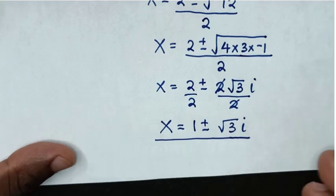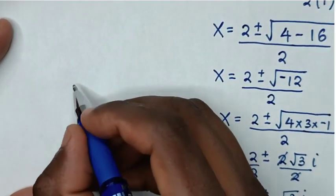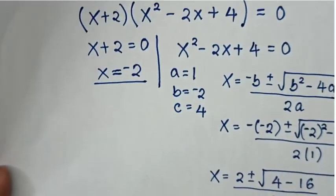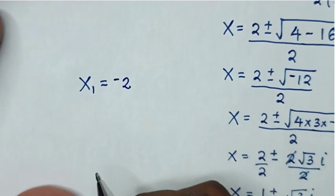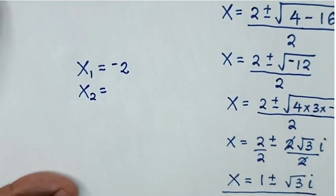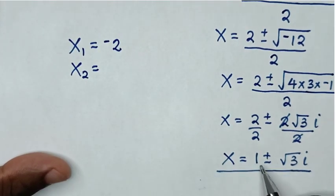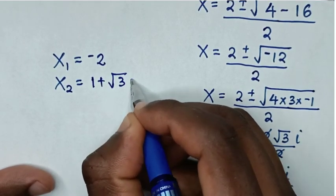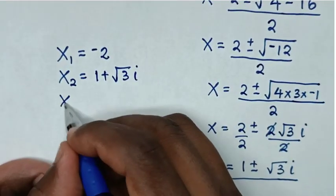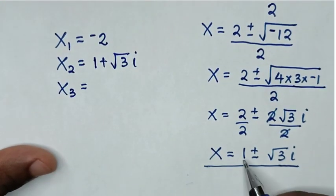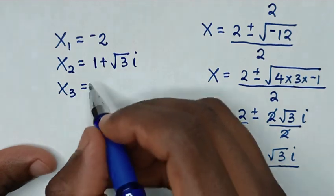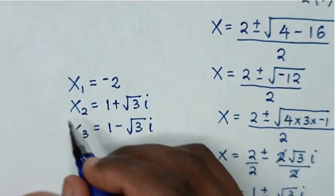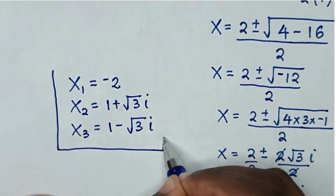So from here, the first value of x is x₁ = -2, the second value is x₂ = 1 + √3·i, and the third value is x₃ = 1 - √3·i. These are all the values of x from this equation.